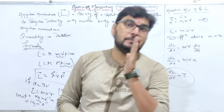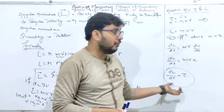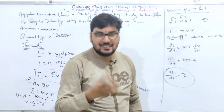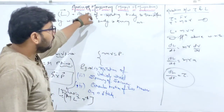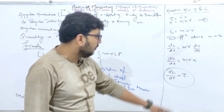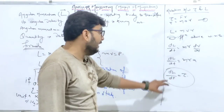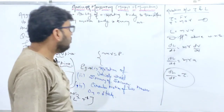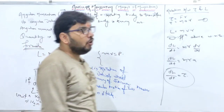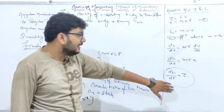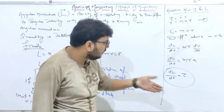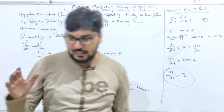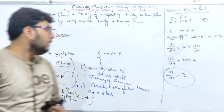This relation dL/dt = τ reminds us of Newton's second law of motion — change of momentum equals the force applied. Similarly here, change of angular momentum is equal to the torque. In rotational motion, force is replaced by torque and linear momentum is replaced by angular momentum. So the change of angular momentum equals the torque applied. This relation between angular momentum and torque is now complete.